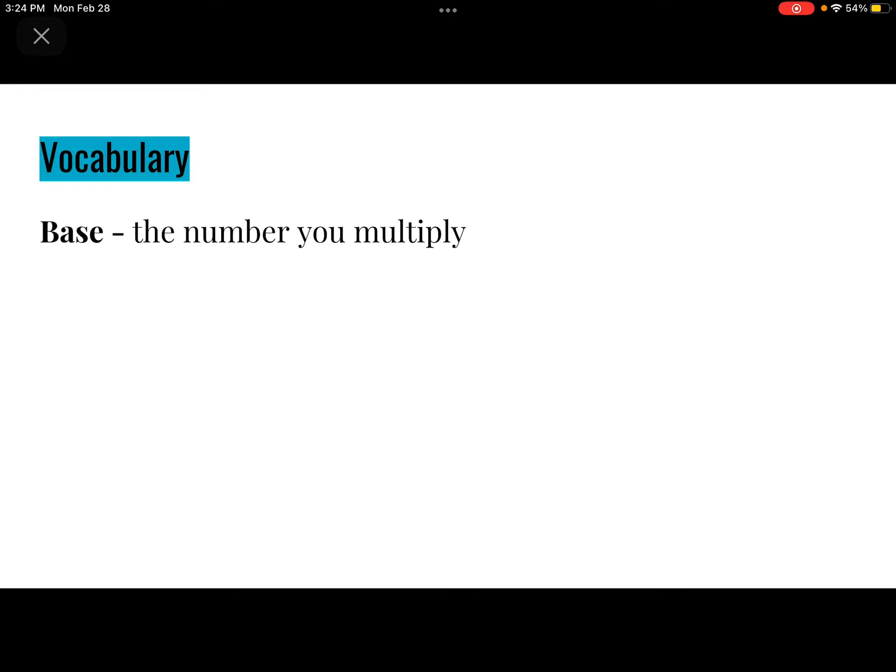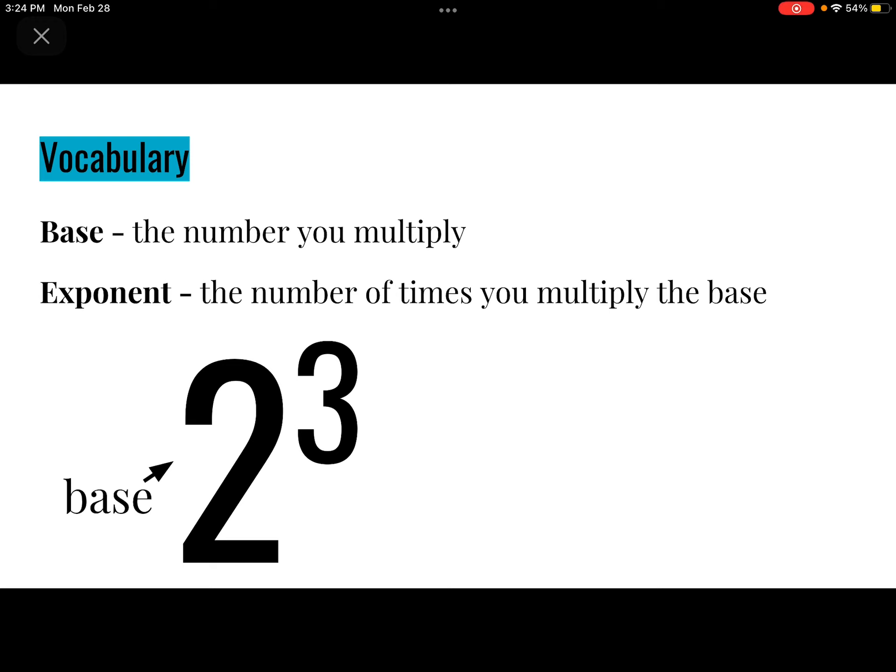Some refreshers on vocabulary related to exponents. The base is the number that we're going to multiply, and the exponent is the number of times we multiply the base. Here's an example of a power. The base is the large 2. That's the number we're going to multiply. And the 3, the exponent, tells us how many times we're going to multiply the 2. So expand it out. That would look like 2 times 2 times 2. I know 2 times 2 is 4, and 4 times 2 is 8, which is 2 to the third power.